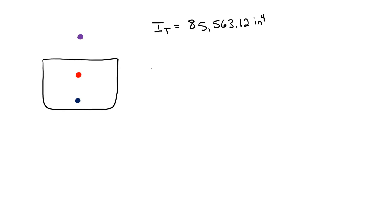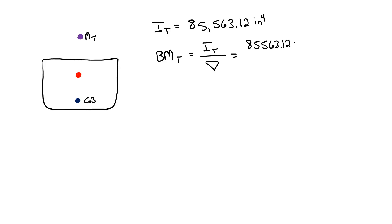Next I need to calculate my metacentric radius, which is my distance from my center of buoyancy to my transverse metacenter. This is simply my moment of inertia in the transverse direction divided by my volumetric displacement, which I said I was going to use from my water plane areas. This gives me a metacentric radius of 8.43 inches.